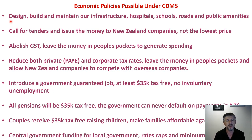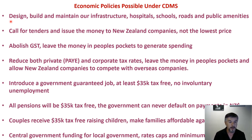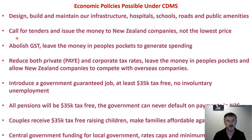We'd introduce a government-guaranteed job at at least $35,000 tax-free, so there is no involuntary unemployment in New Zealand. Unemployment is caused by governments not issuing enough money. Pensions would be $35,000 tax-free — the government can never default on payments in the New Zealand dollars it issues. Couples would receive $35,000 tax-free for raising children — so the parent at home gets a wage and the partner gets a minimum $35,000 government job, equalling $70,000 tax-free — now people can afford to have children, reducing our reliance on immigration. And central government would fund local governments, allowing rates caps and minimum requirements for public amenities in regions.